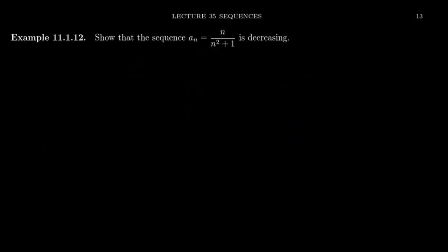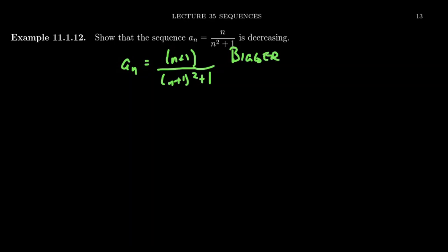As another example, let's show that the sequence a_n = n/(n²+1) is also decreasing. In the previous example, we could just replace n with n+1 and it was straightforward. If we try that here, we get (n+1)/((n+1)²+1), but we have to be more careful because the numerator gets bigger — which typically means the fraction got bigger — but the denominator also got bigger simultaneously. So there's a clash: did the whole fraction get bigger, get smaller, or stay the same? We need to be a bit more sophisticated here.